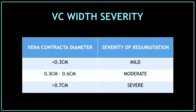How do we know the severity of the jet based on the vena contracta diameter? When the vena contracta diameter is less than 0.3 centimeters, the regurgitation is more likely to be mild. When it is less than 0.6 centimeters, the severity is more likely to be moderate. And when the vena contracta diameter is more than 0.7 centimeters, the regurgitation is more likely to be severe.